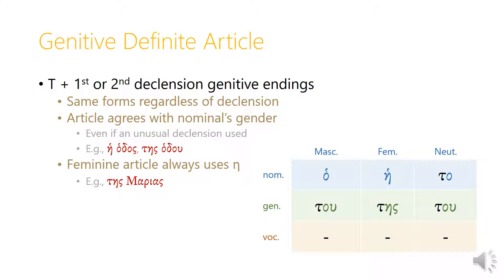The genitive definite article is quite easy — tau again plus first or second declension genitive endings. There's no third declension definite article; third declension nouns use first or second declension endings. The article must agree with the nominal's gender. So ha-dos, a term for road or way, takes second declension endings but its gender is feminine, so we use he not ha, and in the genitive we use tase not tu.